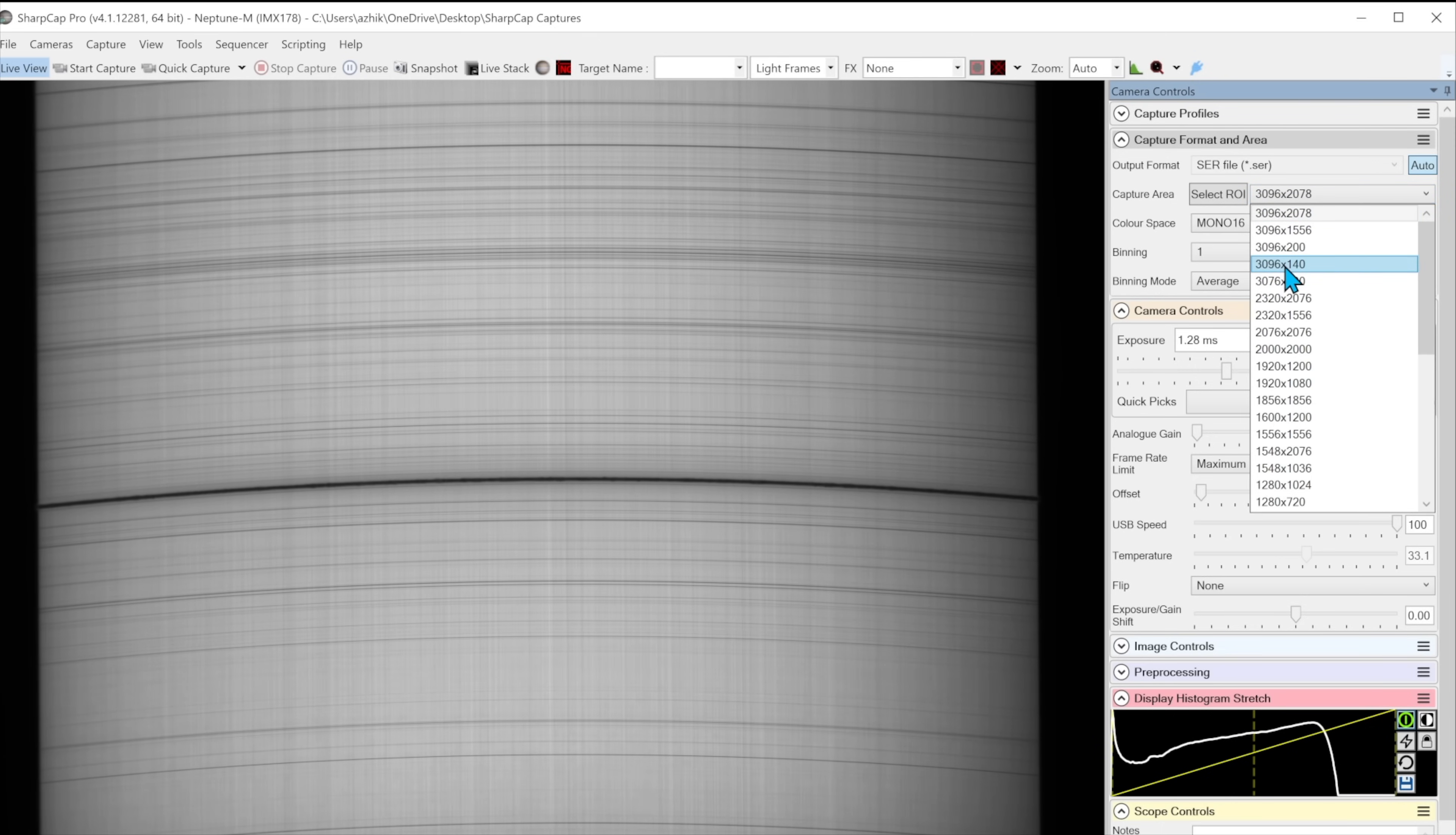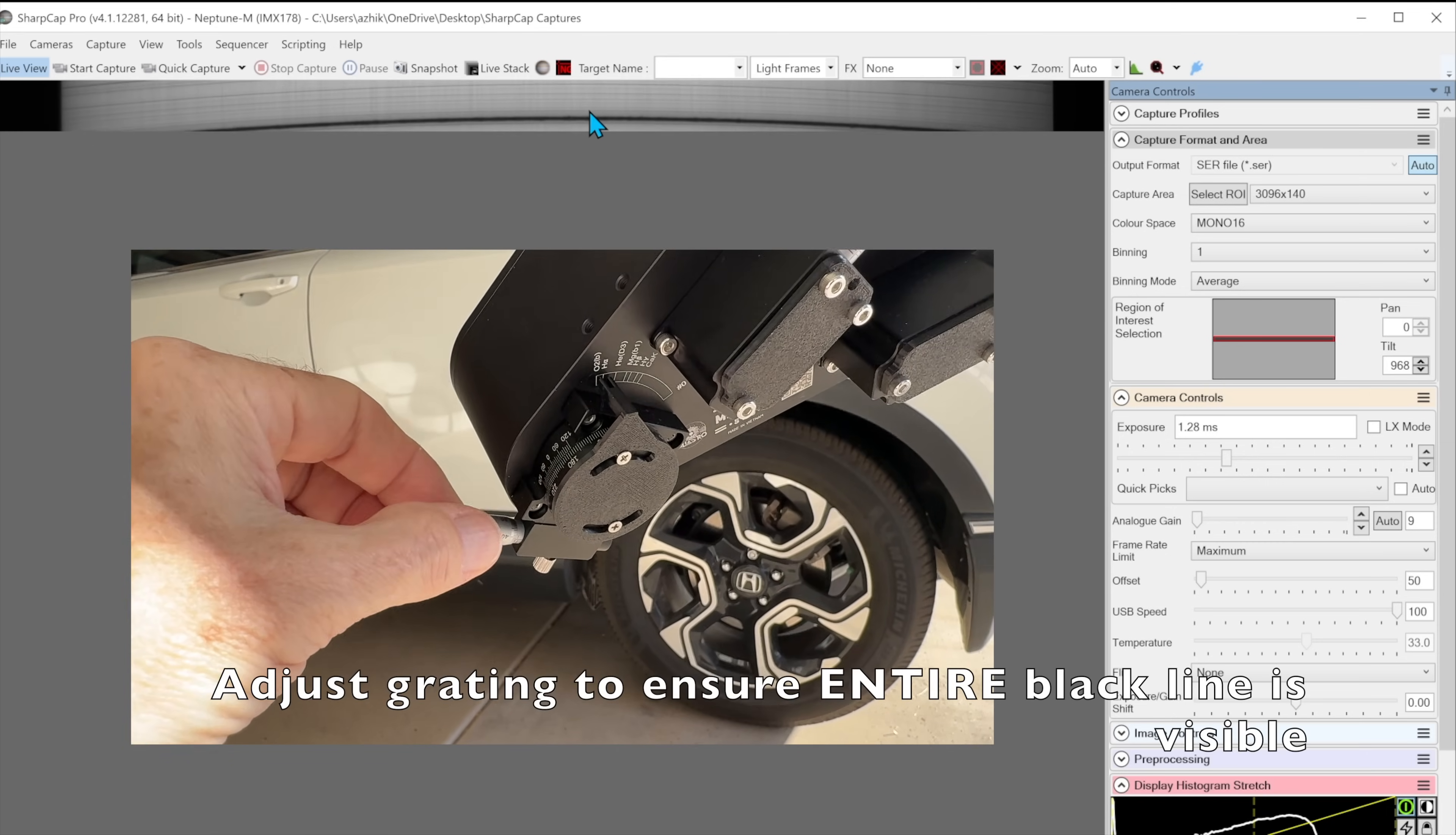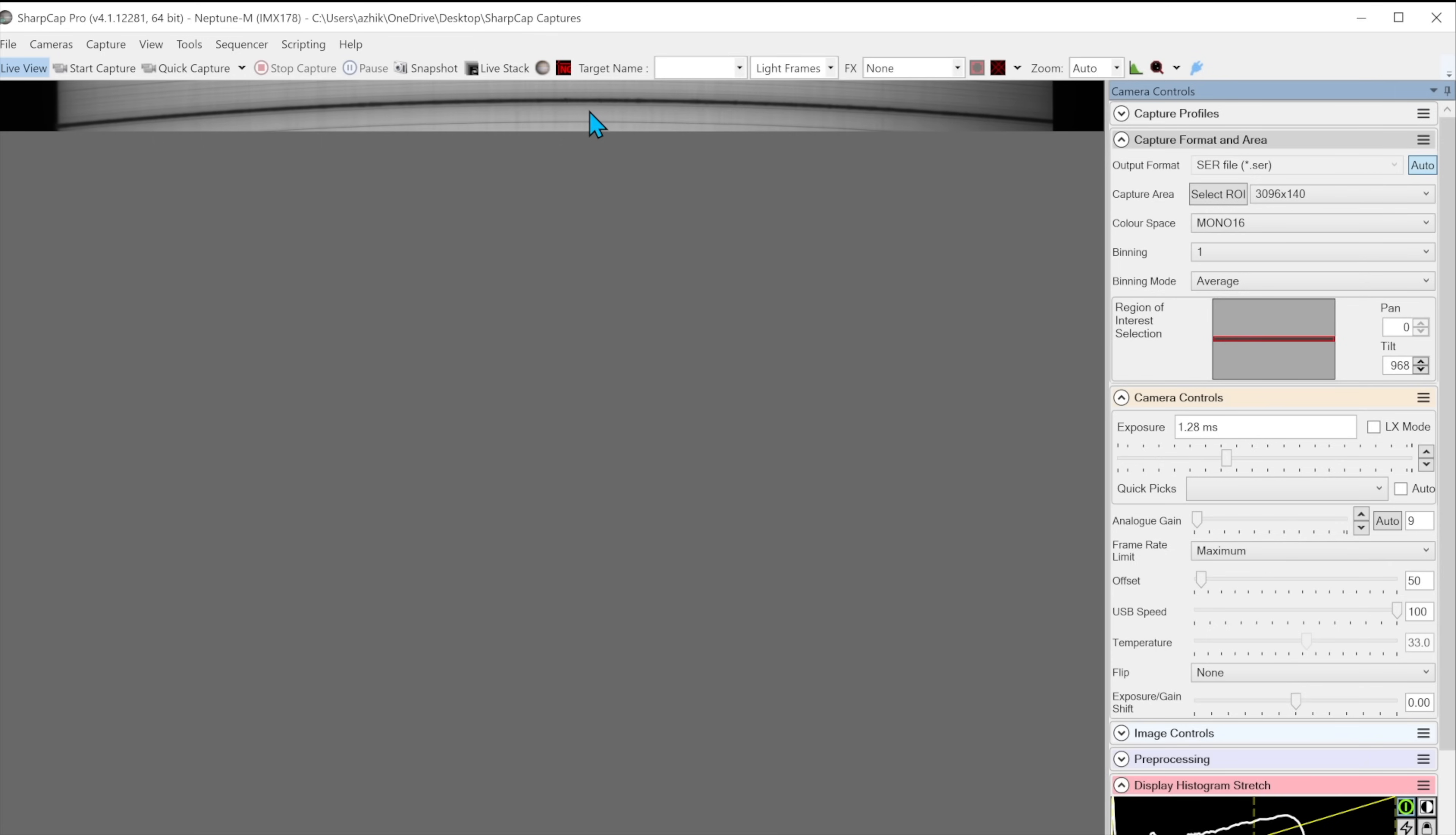With my IMX 178 camera, I set the area to full width by 140 pixels height. In other words, 3076 by 140. With the IMX 678M, I set the area to 3840 by 200. Then check that the HA line is centered and you can see all of it from left to right. Note that it will be slightly bowed. If it is not level, slightly rotate your camera.